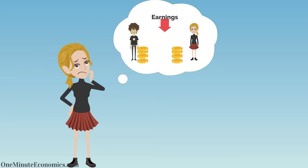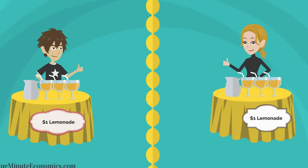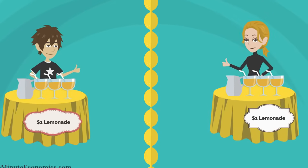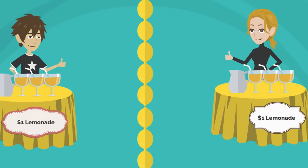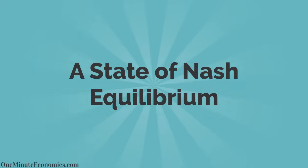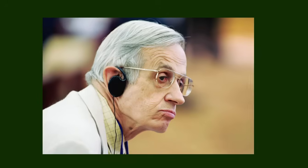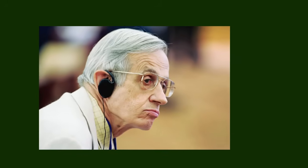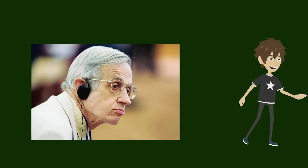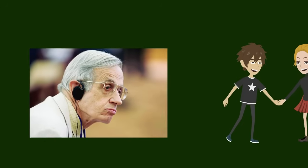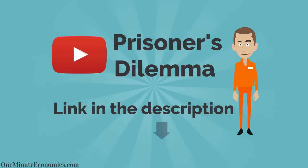The same thoughts probably crossed Rachel's mind as well and she came to the same conclusion. Therefore, both of them keep prices at $1 and from a game theory perspective, we call the situation a state of Nash equilibrium — named after the famous mathematician John Nash. The Nash equilibrium is basically a situation where two or more competitors decide they're better off not changing their existing strategy.